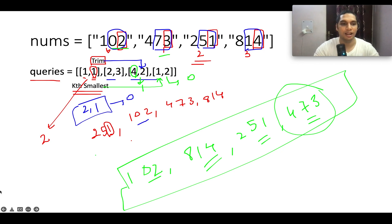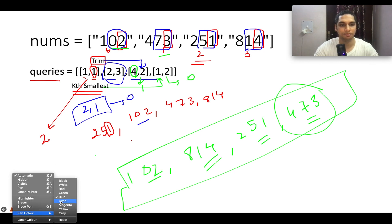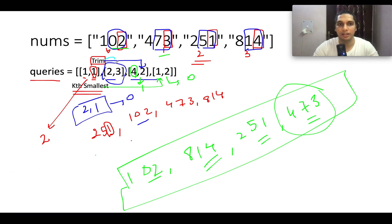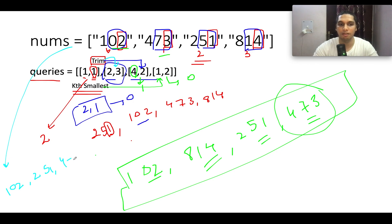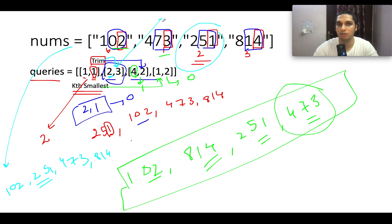Now let's look at the last query, which is (2, 3). The trim value is 3, meaning we consider all three digits of each number: 102, 473, 251, and 814. After sorting the full numbers, the order is 102, 251, 473, and 814. The second smallest element is 251, which occurs at index 2 in the original array. So the answer for this query is 2.